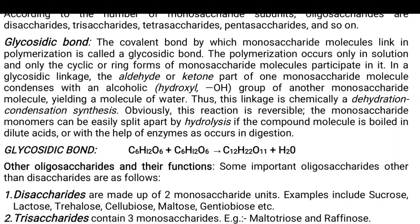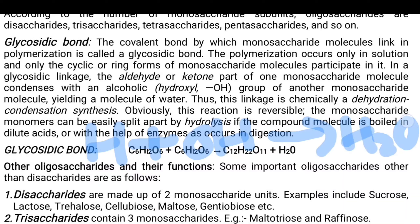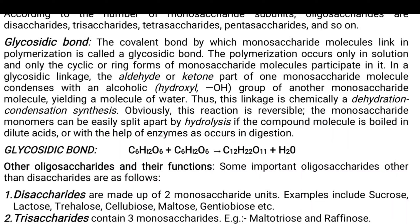In a glycosidic linkage, the aldehyde or the ketone part of one monosaccharide unit condenses with the hydroxyl group of another monosaccharide molecule, yielding a molecule of water — H plus OH gives H2O. This is a simple condensation reaction, chemically called dehydration condensation synthesis. This reaction is reversible; the monosaccharide monomers can be split apart by hydrolysis if the compound is boiled in dilute acid or with special enzymes that occur in digestion.